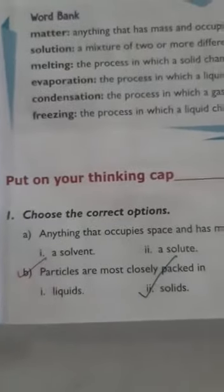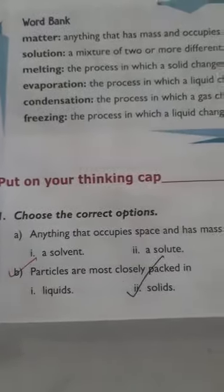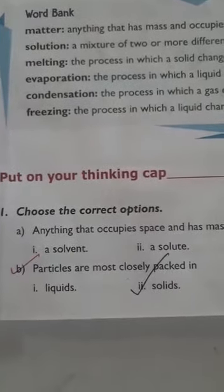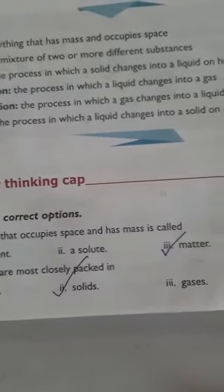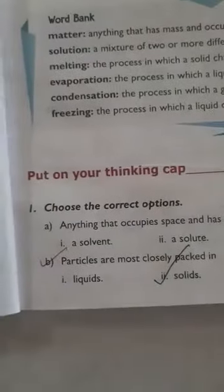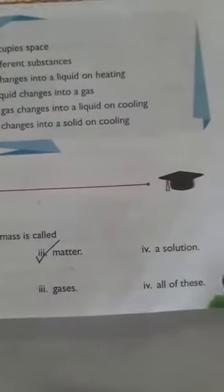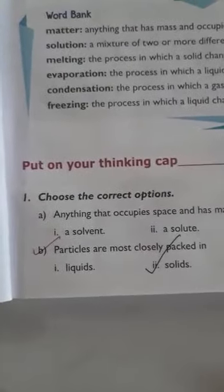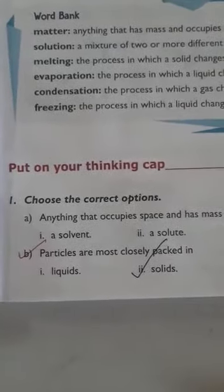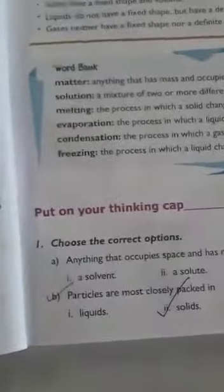Now we will see the textbook exercises — tick the correct option. Question 1: Anything that occupies space and has mass is called — options: solvent, solute, matter, solution. Correct answer is matter. Question 2: Particles are most closely packed in — liquid, solids, gases, all of these. Correct answer is solids.